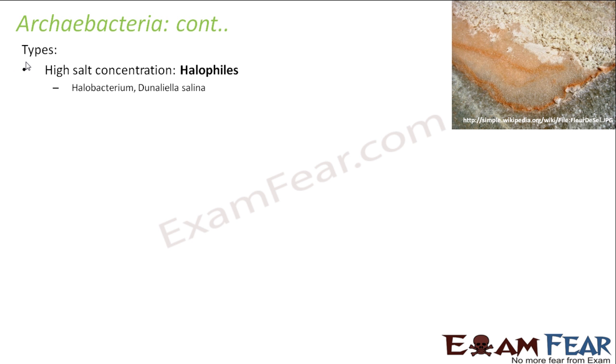That was about the habitat of Archaebacteria. Now let us see the different types of Archaebacteria. These Archaebacteria have been divided into different types based upon their habitats. Those bacteria which live in areas with high salt concentration are known as halophiles. The word 'phile' means love, and the word 'halo' is related to salt. So the bacteria which love salt are halophiles — that is why they live in areas with high salt concentration.